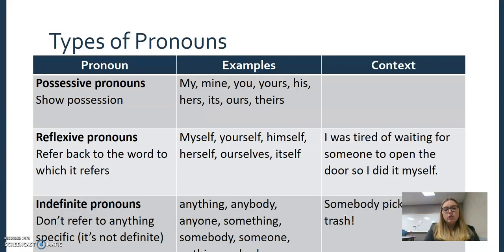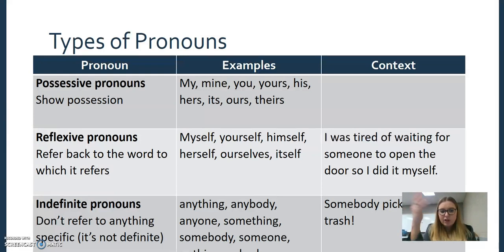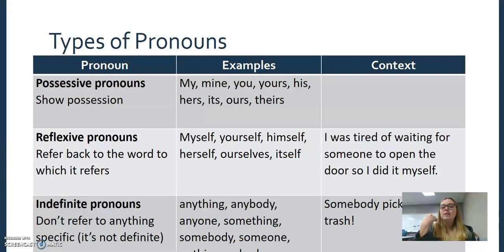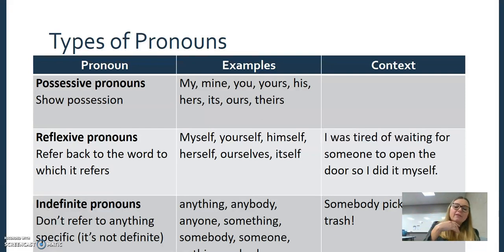Reflexive pronouns all end in 'self' or 'selves': myself, yourself, himself, herself, ourselves, itself. 'I looked at myself in the mirror.' 'He was talking to himself.' 'If you want something done right, you have to do it yourself.'